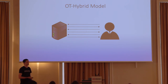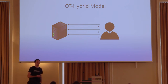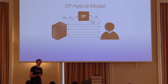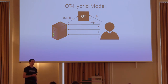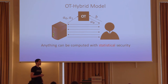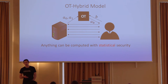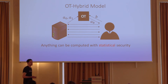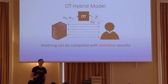In this model, similarly to the previous slide, the parties can interact with each other and send messages back and forth. However, now they have idealized access to some OT functionalities, where they can ask a trusted party to compute oblivious transfer for them. We know that in this model, basically any client-server functionality can be computed with statistical security — so we know that everything can be computed.